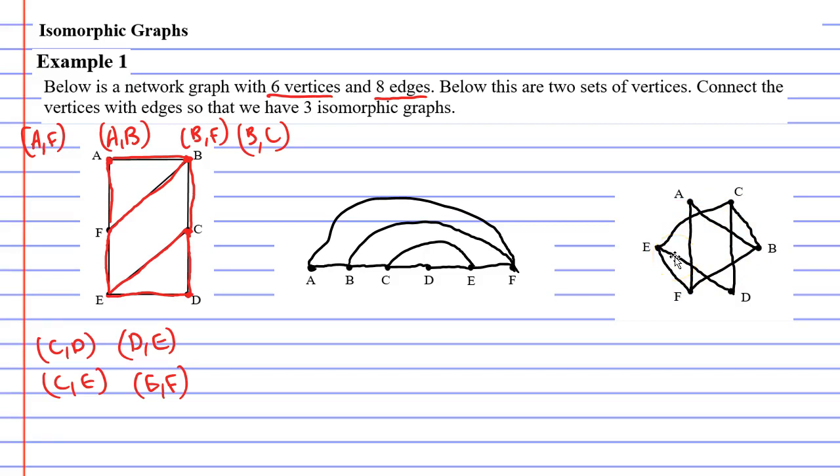So we can see they all have six vertices and eight edges. You can also check the degree of each vertex. You'll notice that we have two vertices with a degree of two. The A and the D only have a degree of two and the other vertices have a degree of three. Excellent.